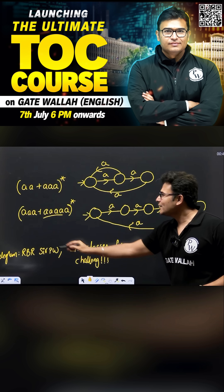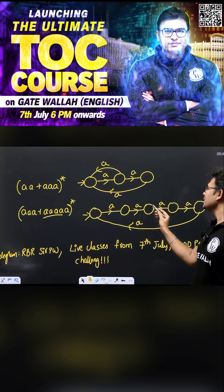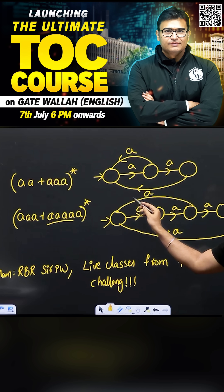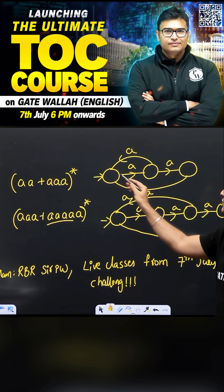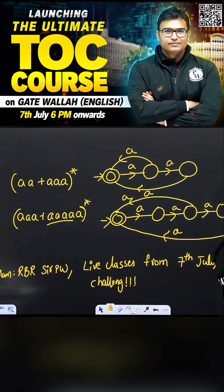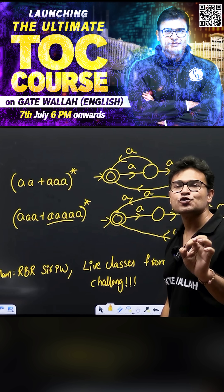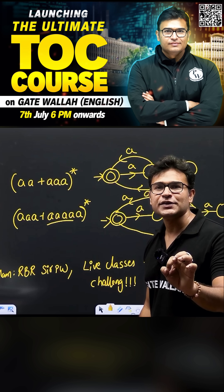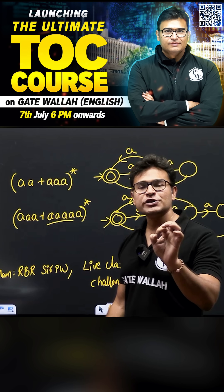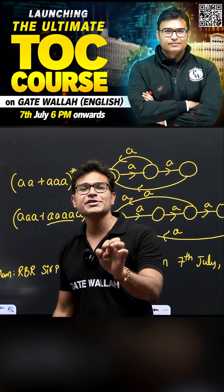Five a's, and then there is a loop on three a's — one, two, three — there is a loop on three a's. This is going to be the final state. It just took me 10 seconds to solve the GATE question.